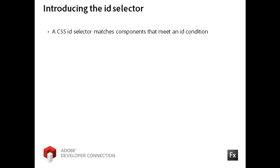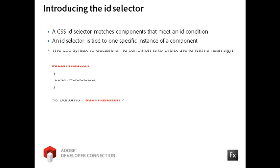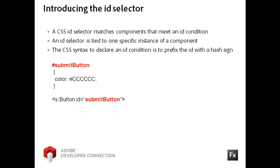An ID selector styles the component that has an ID property that matches the selector defined in the CSS file. The selector is tied to one specific component instance. The syntax is to declare the ID property prefixed with a hash or pound sign. In this case, the code is targeting a button control with the ID property of submit button to turn its text to a gray color.